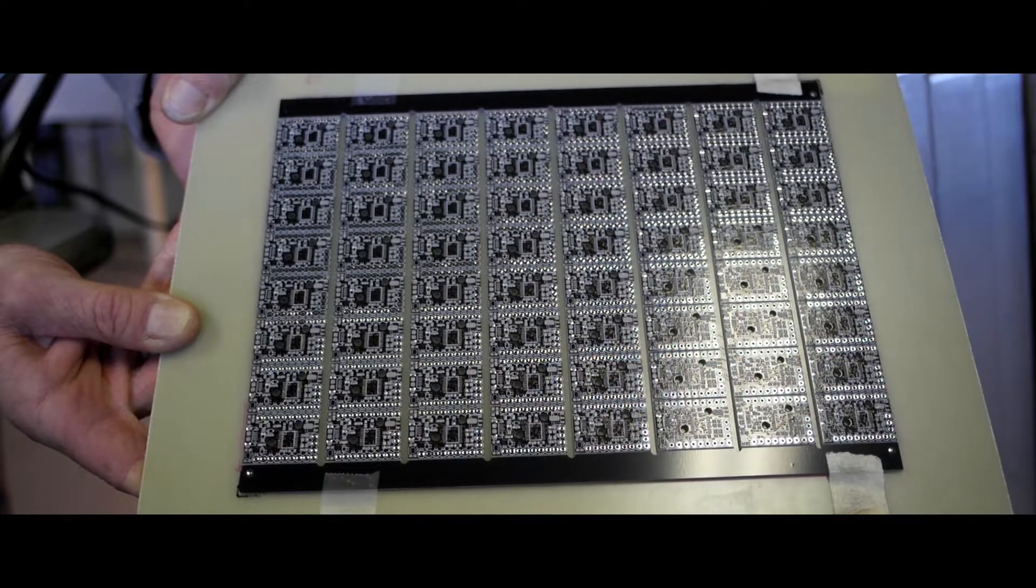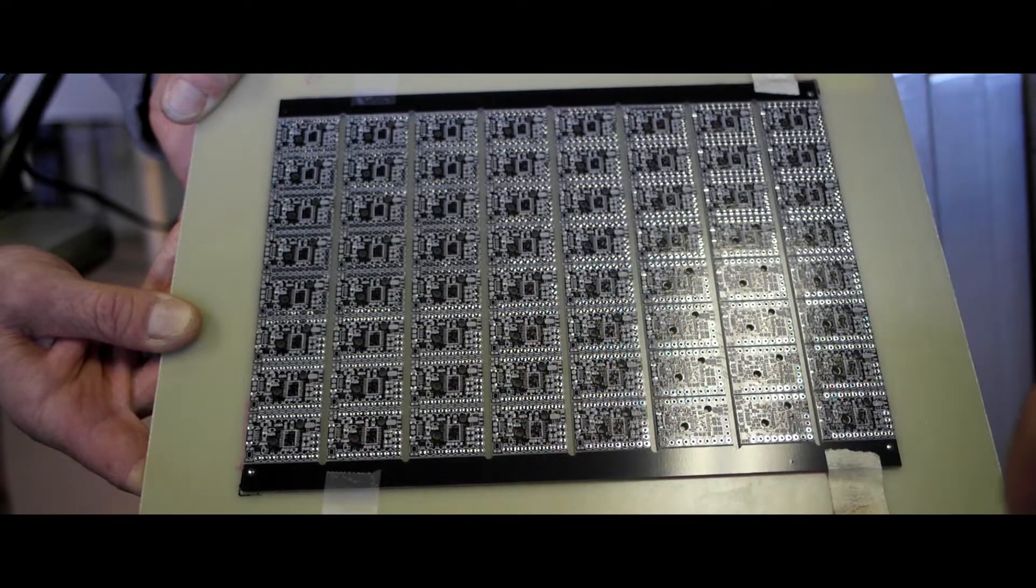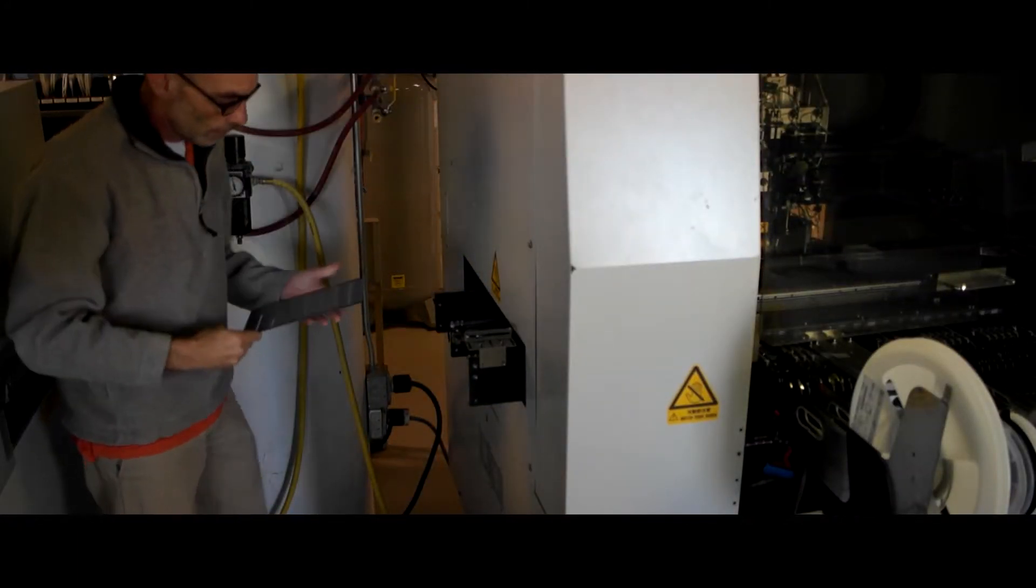Here's the board out of the printer. It's probably hard to see but there's a layer of solder paste on all these pads. Now Dave's loading the machine into the pick and place.